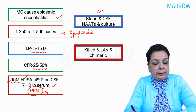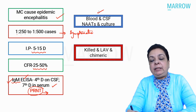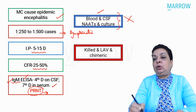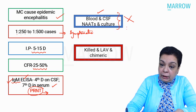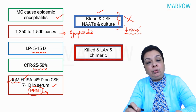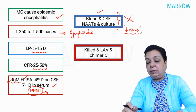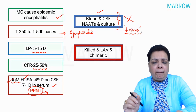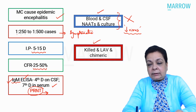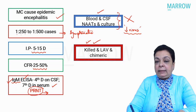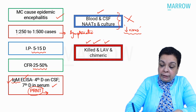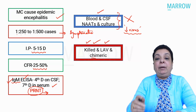JE vaccines include killed vaccines prepared in mouse brain or cell lines, live attenuated tissue culture vaccines, and chimeric vaccines.